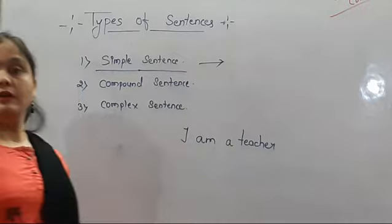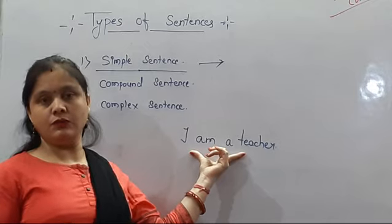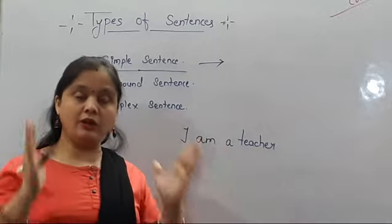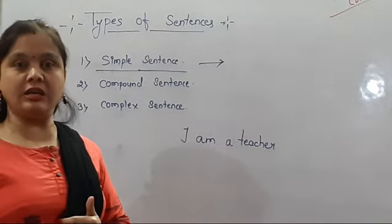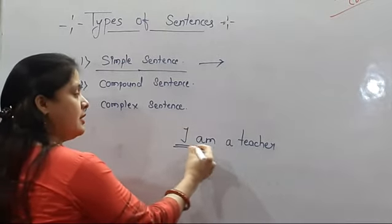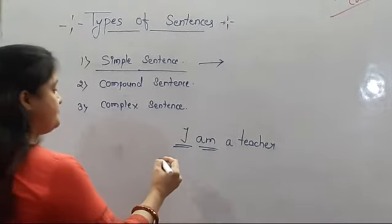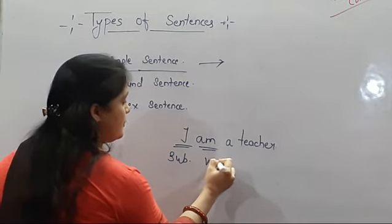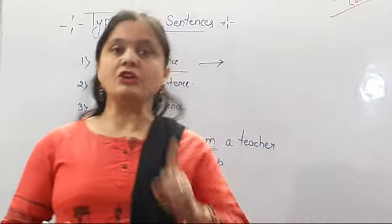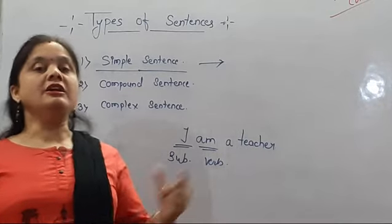Look, this is a simple sentence: 'I am a teacher.' This sentence makes our thought clear — we are thinking about something and it is expressed completely. It is clear. There is one subject and one verb. One subject and one helping verb — that is a simple sentence.